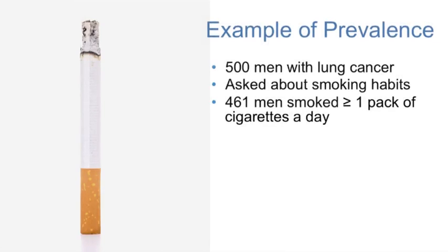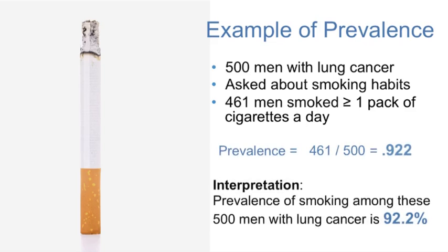Here is another example illustrating how to calculate the measure of prevalence. In this example, 500 men with lung cancer are asked to report on their smoking habits. Of the 500 men, 461 reported smoking at least one pack of cigarettes a day. The numerator is the number of smokers, 461, and the denominator is the total number of men with lung cancer in the study, 500. The prevalence is 461 divided by 500, or 0.922, or 92.2%. The interpretation is: the prevalence of smoking among these 500 men with lung cancer is 92.2%.